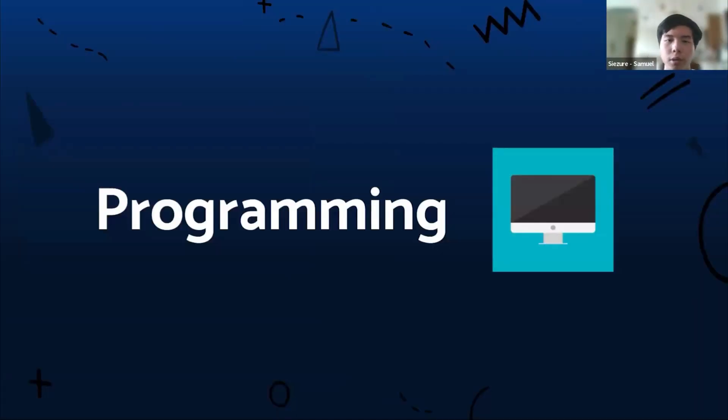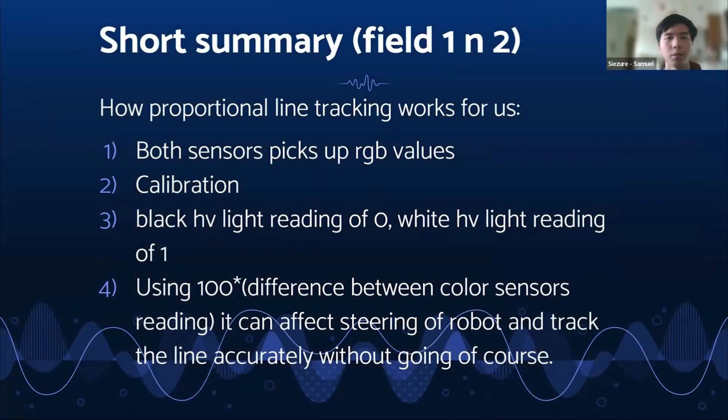Now onto programming. Here's a short summary on how the line tracking works for us, because I know it is quite intensive in EV3. First, we use both sensors to pick up RGB values because black and white have different values, and throughout the field there are different lighting values. We measure these values first, then calibrate them through an equation. Since black reflects less light than white, we made it so that black will have a light reading of zero while white will have a light reading of one. This allows the robot to determine what is black and white and accurately line track.